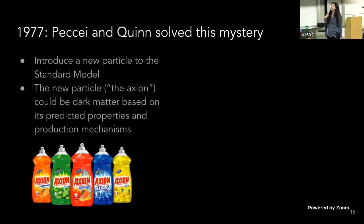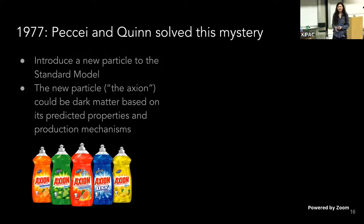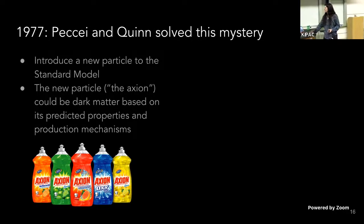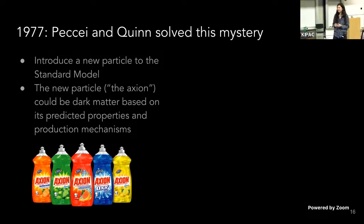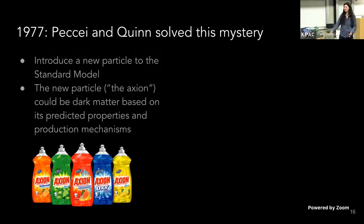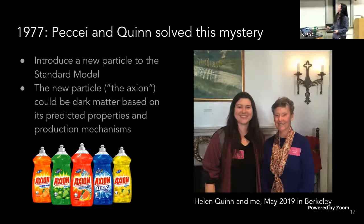In 1977, Peccei and Quinn proposed a solution to this mystery: the introduction of a new particle called the axion. They actually named it after a detergent, because it cleaned up this theory so well. This new particle, the axion, based on the properties it has in solving the mystery of the missing neutron electric dipole moment, can also be dark matter — it can naturally be produced in the universe. And here's me with Helen Quinn in Berkeley a few years ago, so it feels real — it's not some old thing in the past.